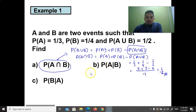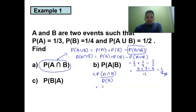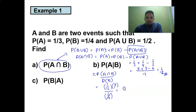Probability of A given B equals probability of A intersect B divided by probability of B. We found probability of A intersect B is one over twelve. Dividing one over twelve by probability of B which is one over four: flip and multiply to get four over twelve, which simplifies to one over three.